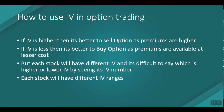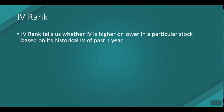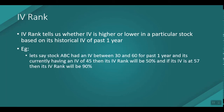To overcome this, we have something called IV Rank. Based on IV Rank, we can come to one conclusion about whether the current IV is higher or lower. IV Rank tells us whether the current IV is higher or lower for a particular stock based on its historical IV of the past one year. It takes the historical values of the past one year and gives us the IV Rank.